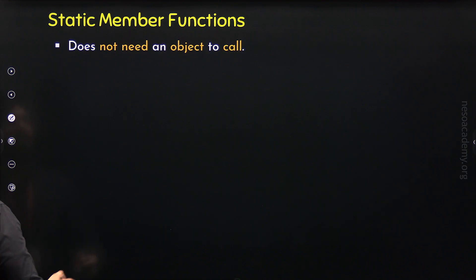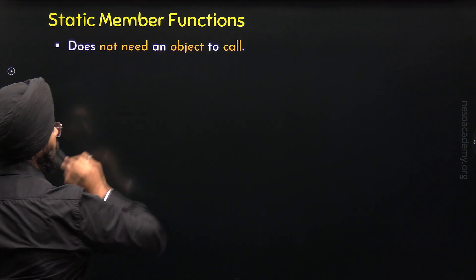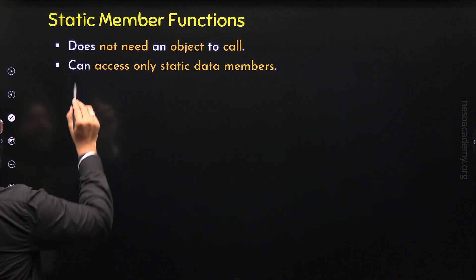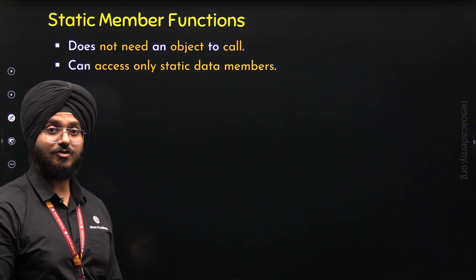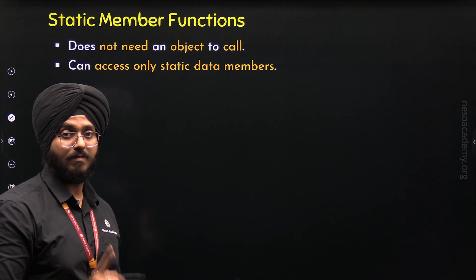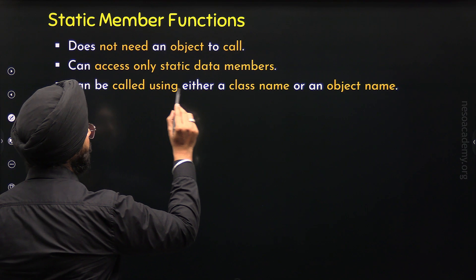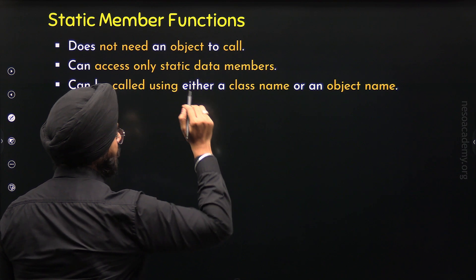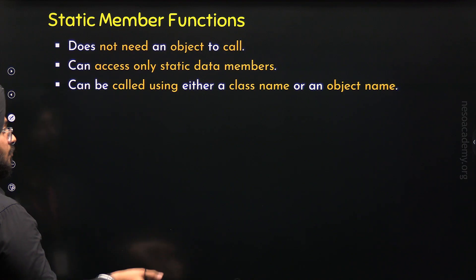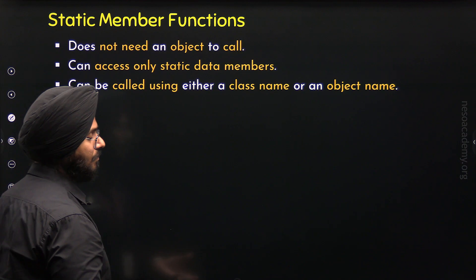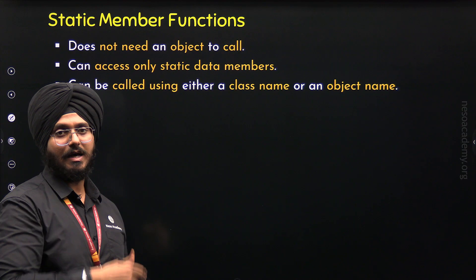Static member functions do not need an object to be called — they can be called directly through the class name. Also, a static member function can only access static data members; it cannot access normal data members. Apart from this, it can be called using either a class name or an object name, although it is better and more advisable to call it through the class name.